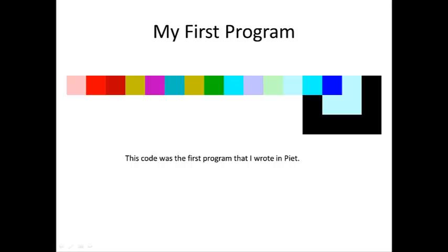We have just stepped through our first program in PEAT. This program produces an exclamation point, which has an ASCII character value of 33.